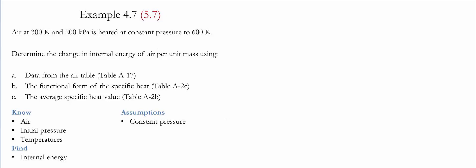The second one is to use the functional form of the specific heat, which is in table A2C. And then the last one is to find the average of the specific heat using table A2B.